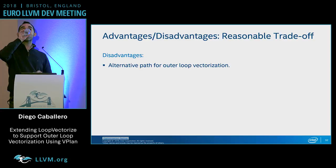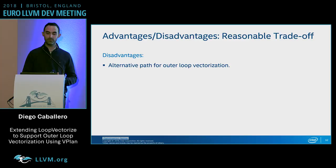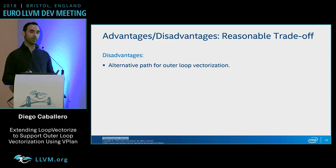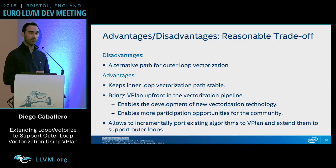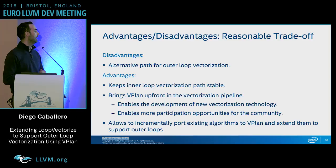The main disadvantage is introducing an alternative path for outer loop vectorization — we don't want two vectorization paths for too long. However, this brings significant advantages: we keep the inner loop vectorizer stable, we bring vPlan up front in the pipeline, we enable development of new vectorization technology, enable community participation in the design of vPlan, and allow incremental porting of existing algorithms to also support outer loops.